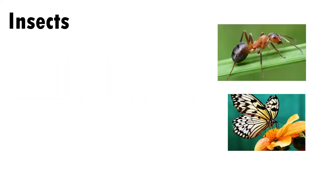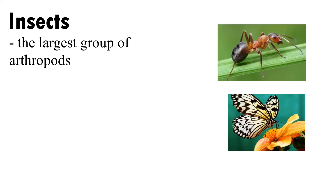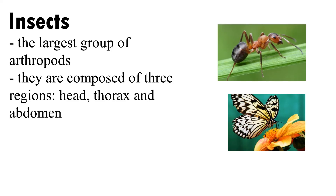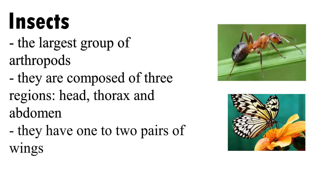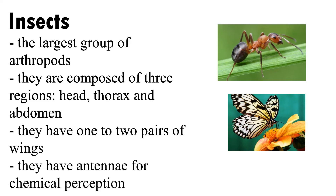Insects are the largest group of arthropods. They are composed of three regions: head, thorax, and abdomen. They have one to two pairs of wings and an antenna for chemical perception.